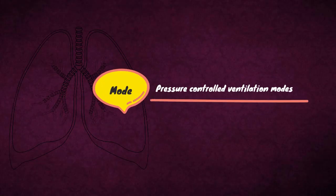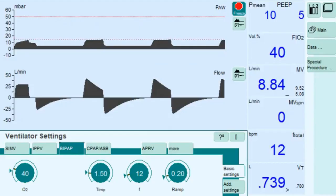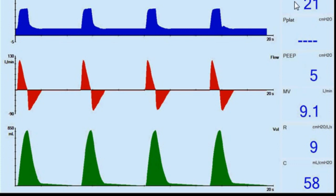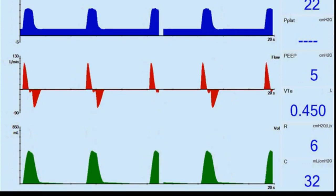Moving on to Pressure Controlled Ventilation Mode — Pressure Control Continuous Mandatory Ventilation. The tidal volume supplied to the patient depends on the pressure difference between PEEP and inspiratory pressure, the lung mechanics, and the breathing effort of the patient. The number of mandatory breaths is defined by the breathing frequency. The mandatory breaths are machine-triggered and not triggered by the patient.